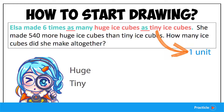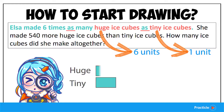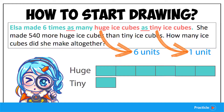And since the tiny ice cubes are represented by one unit, how many units represent the huge ice cubes? That's right — six units. So let's draw one rectangular box to represent one unit for the tiny ice cubes, and six rectangular boxes on top of it to represent the huge ice cubes.